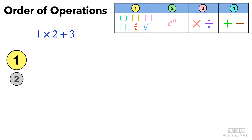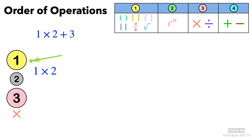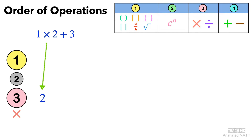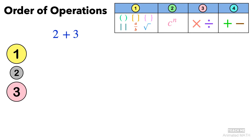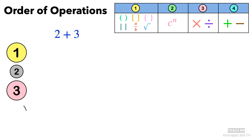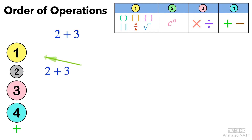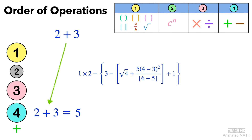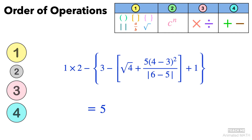Step 2 doesn't apply here, so we can move to Step 3. 1 times 2 is 2, so our expression is now equal to 2 plus 3. The order of operations has helped us simplify the very long sample expression. Finally, applying Step 4 for addition, our answer is 5.